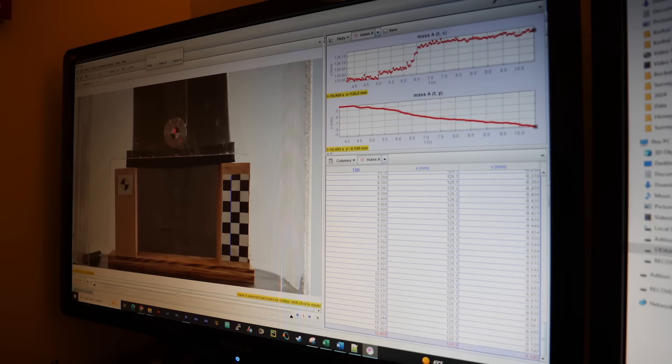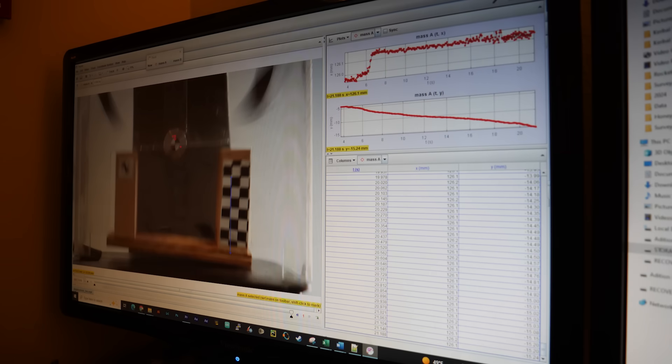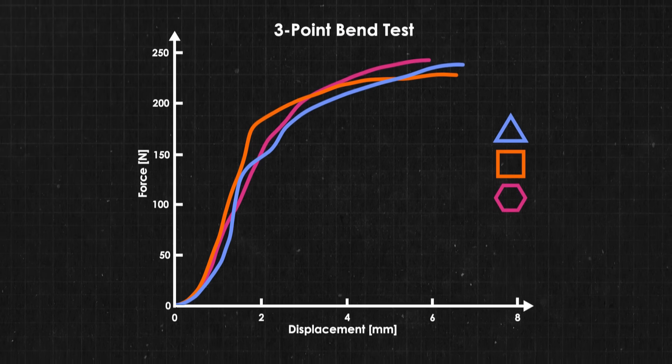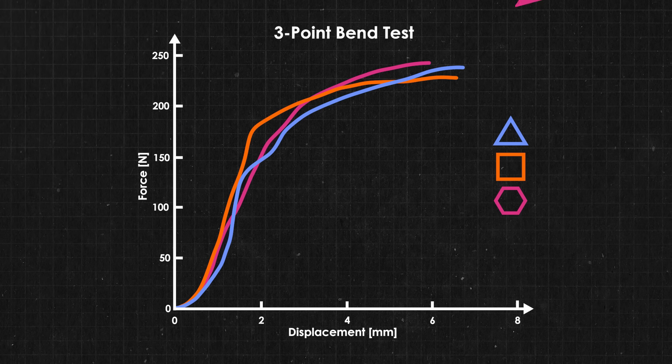Once again, I used tracker to measure displacement so I could create a force versus displacement plot and compare the samples. And this is what I found. They're all almost identical. Okay, so before someone mentions that yes, hexagons technically broke at the highest force, but they were only about 1% above triangles. That's definitely just in the noise at this point.